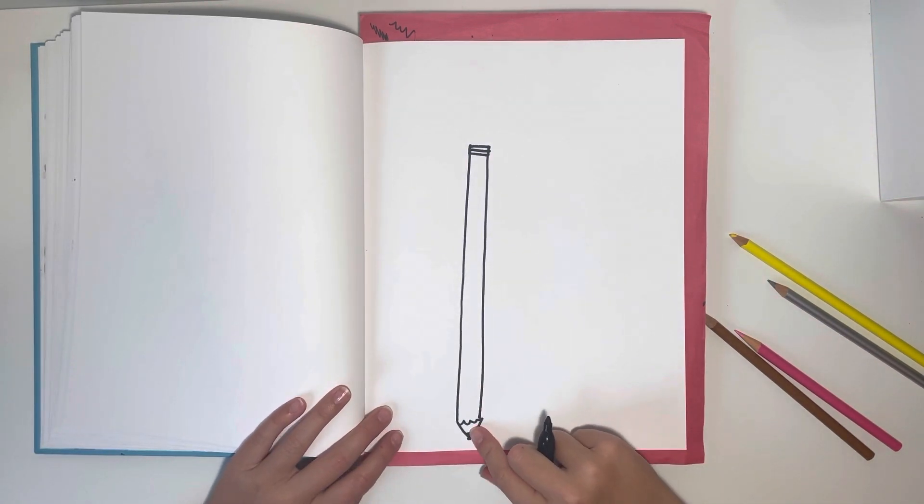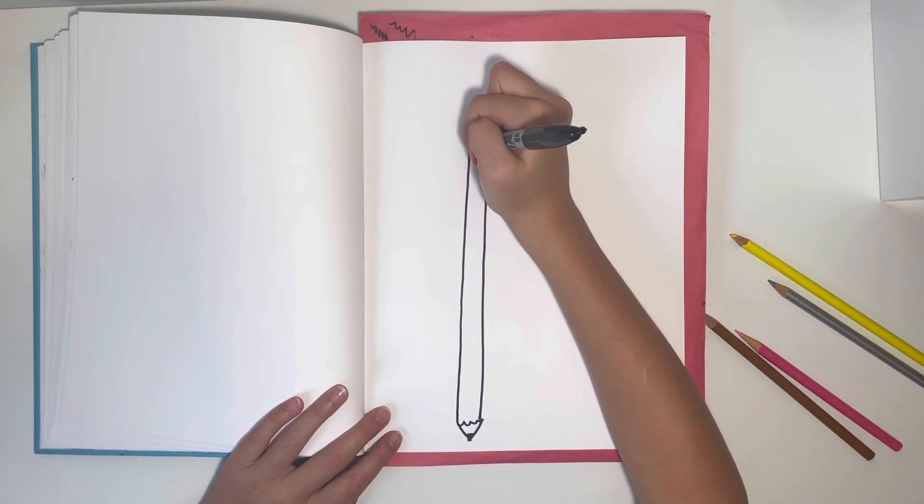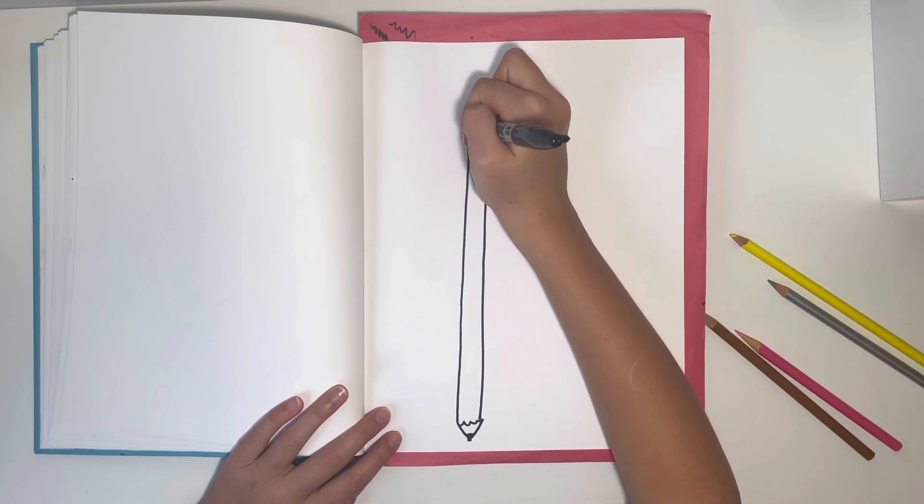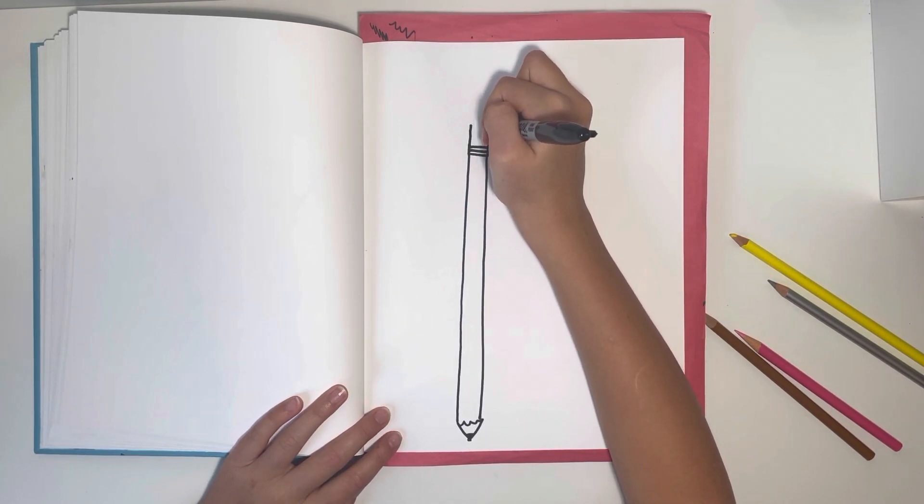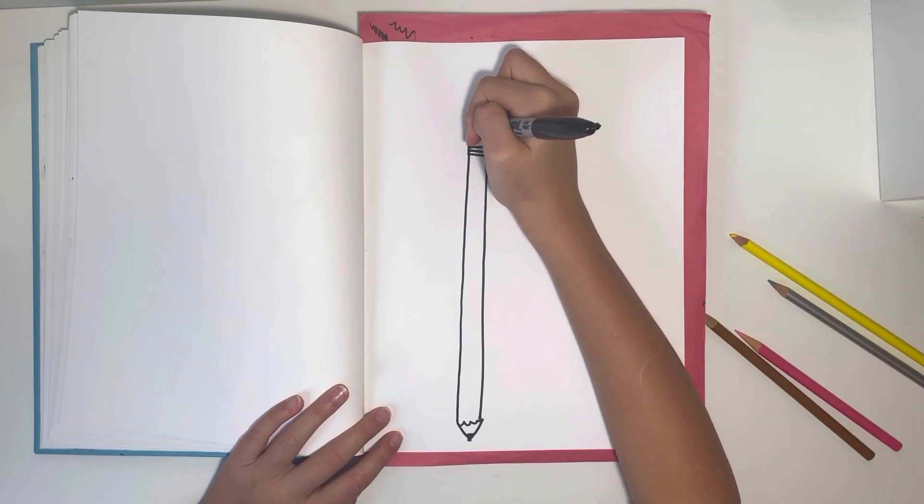Now our pencil needs an eraser. So I'm going to draw two lines that go up and connect them.